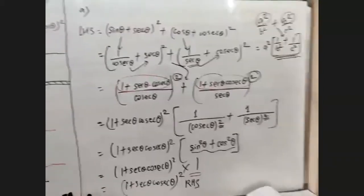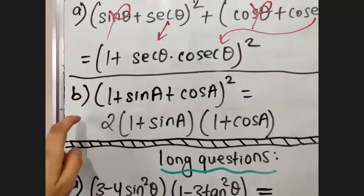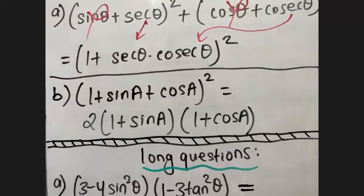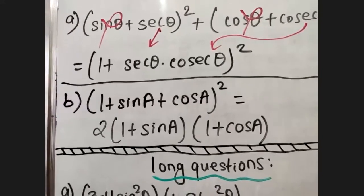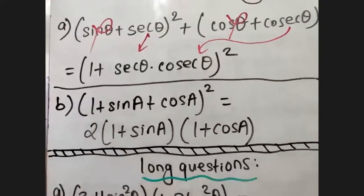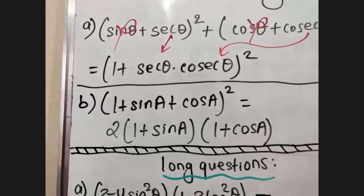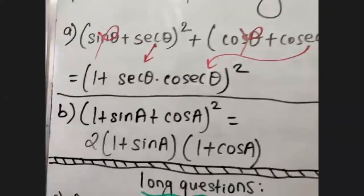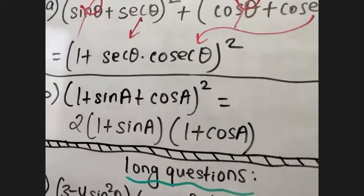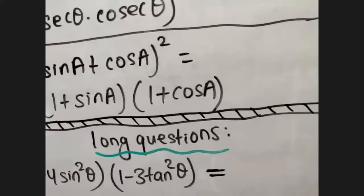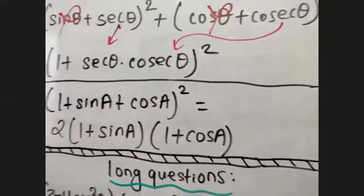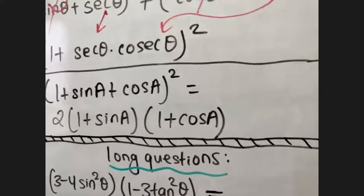Copy the next question — this is our second question. Question B was also an assignment from the previous lecture: one plus sine A plus cos A, all square, equals two bracket one plus sine A bracket closed, and next bracket one plus cos A, bracket closed. This question is also of two marks and very short. Copy the question, and if you have already done the assignment it's better to do it again as practice.